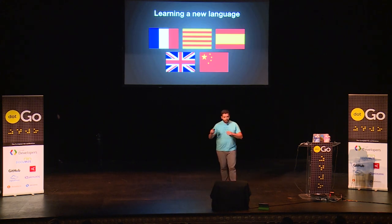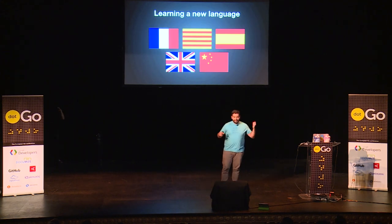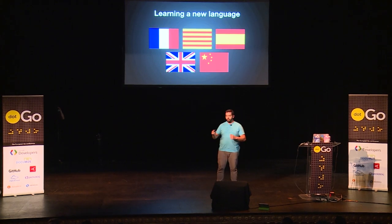So before we speak about Go, I speak four languages, which means that I'm very good at learning languages, but I'm also an expert at failing to speak languages. I'm learning Chinese, which is a very good way of failing to learn a language.